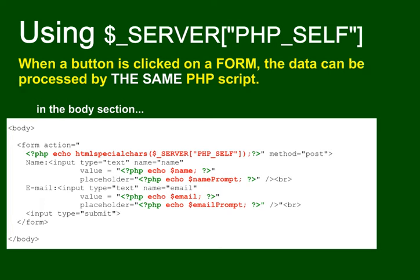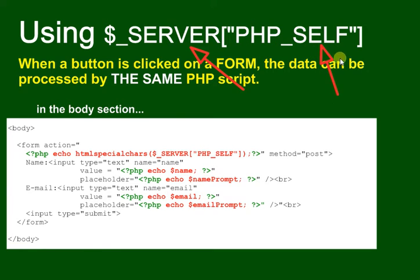I want to use an example to show you how to use the PHP_SELF variable. Instead of sending data from a form off to another page to be processed, you can send it to the same page — it processes itself. This is done with the server variable dollar underscore SERVER, specifically dollar underscore SERVER PHP_SELF. The word 'self' is important — it's a server variable that knows the name of the current page.